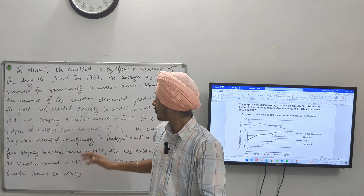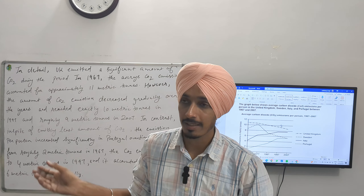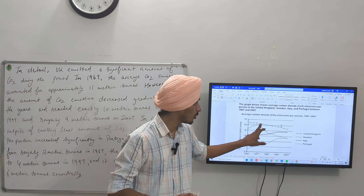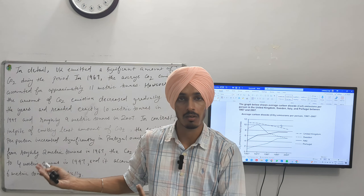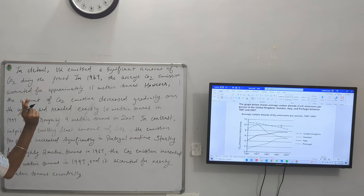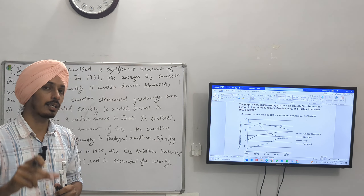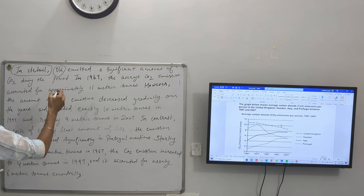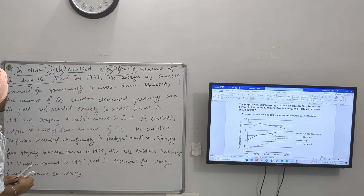Now I have written body paragraph one on the board. We will discuss how to manage and organize the information. I start with 'in detail' — which means now I am going to describe things clearly. I have started with UK, as we discussed this in the overview. UK emitted a significant amount of CO2 during the period. In 1967, the starting year, the average CO2 emission accounted for approximately 11 metric tons.